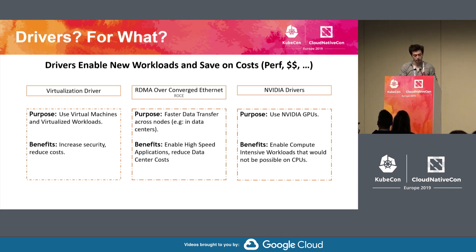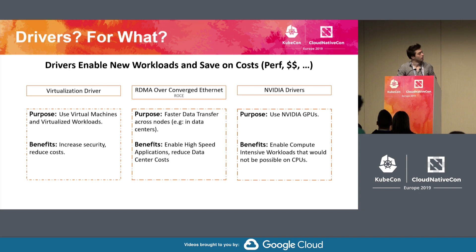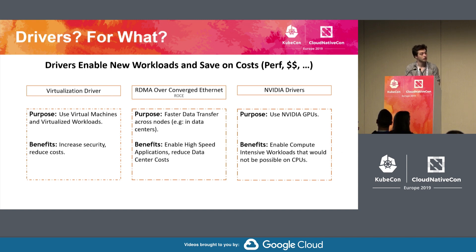If we take three examples: the first one would be virtualization. It allows you to use virtual machines, improve your security, and run multiple untrusted workloads on the same machine, hence save on costs. RDMA over Converged Ethernet, RoCE, allows you to have faster data transfer across your nodes in your data center. This enables high-speed applications, and if your application is faster, you don't need to invest in hardware to make it faster.